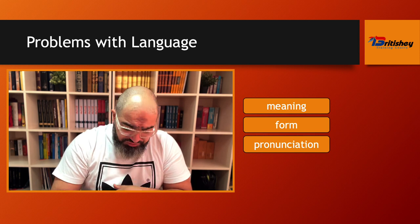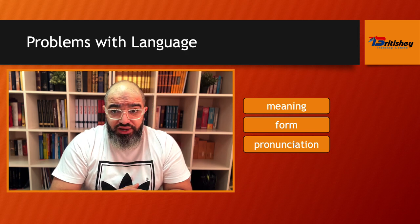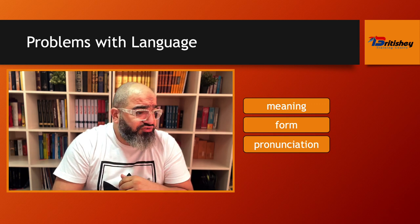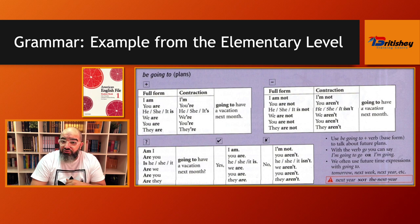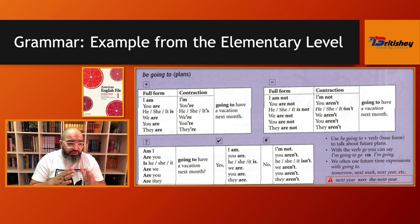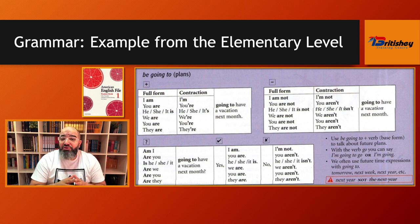Let's start with an example on grammar from the elementary level. The book is American English File — a wonderful book. Here is a grammar part about 'be going to.' So what problems might be related to this grammar lesson? Let's think about meaning. 'Be going to' is used to express future plans. Students might be confused between the usage of 'be going to' and the usage of 'will,' and this is a meaning problem — they might be using 'be going to' in the wrong context.